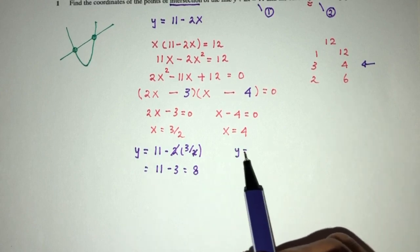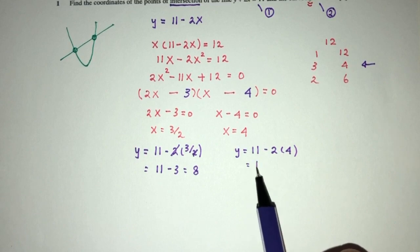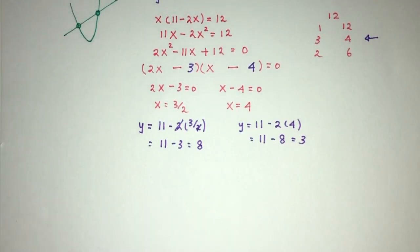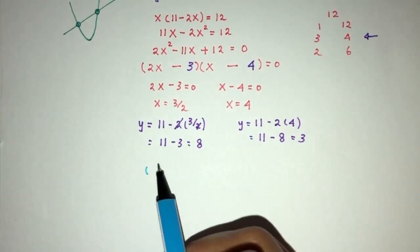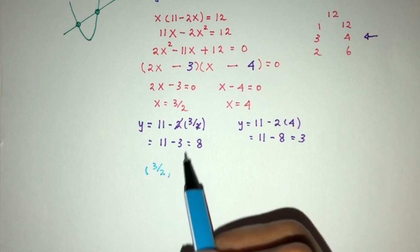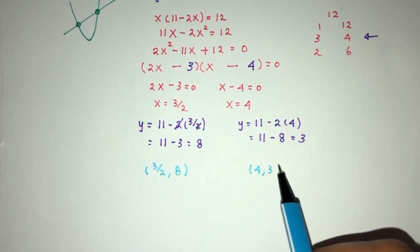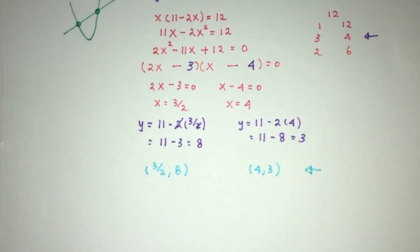And for this one, y equals 11 minus 2x. x is 4, so that will be 11 minus 8, which equals 3. As you can see, we have the coordinates of the two points. The first point is (3/2, 8), and the second point is (4, 3). So these are the two points we need to find for this question.